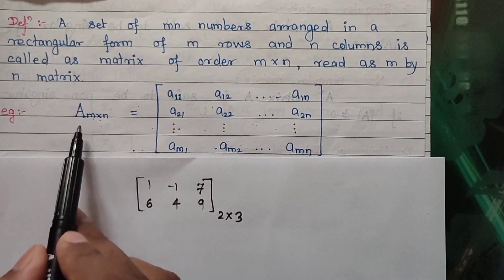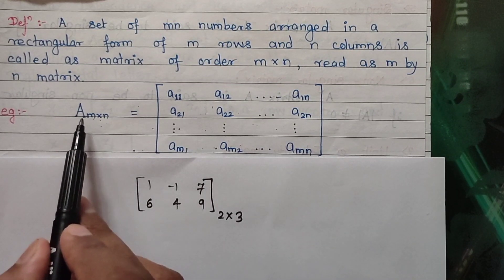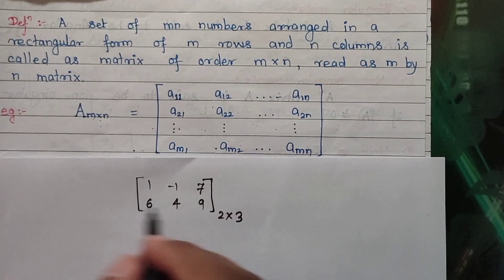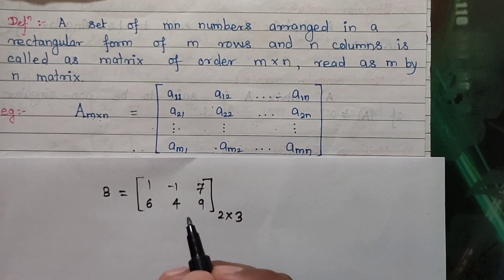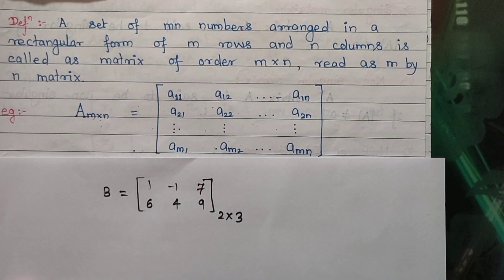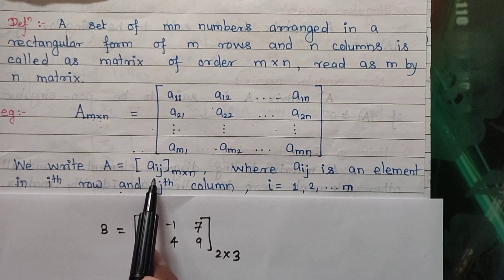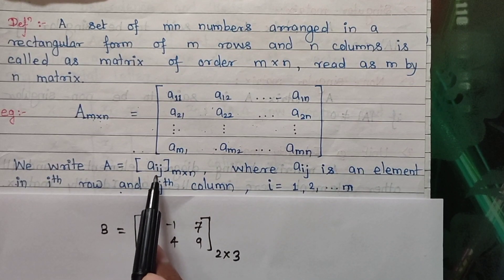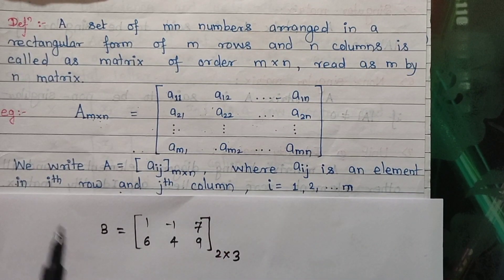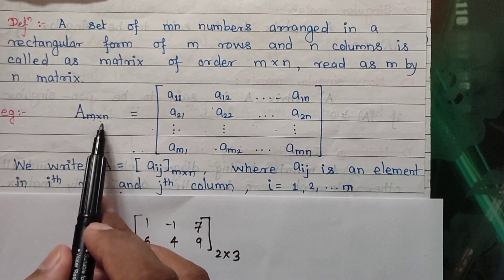One remark I would like to make is that matrices are generally denoted by capital alphabets. We have defined one matrix of order 2 by 3 — let us give it a name, say B. And if you wish to represent the entire matrix by a single notation, you may write A = [Aij] of order M by N, where Aij is an element, sometimes also called an entry, of the ith row and jth column, where i varies from 1 to M and j varies from 1 to N.